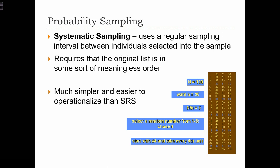Systematic sampling is quite similar. Here we use a regular sampling interval between individuals selected into the sample. We must start with an original sampling list that is in some sort of meaningless order, so we somehow need to randomize our list of individuals.